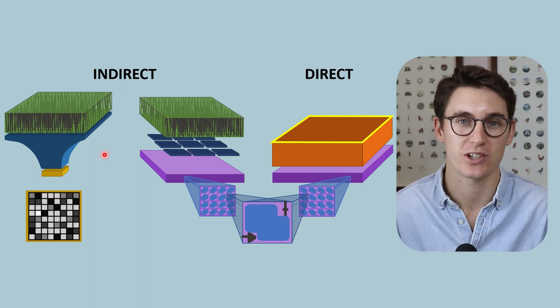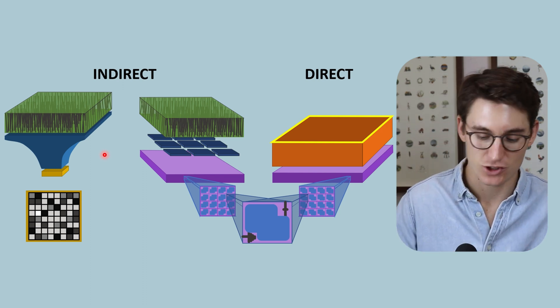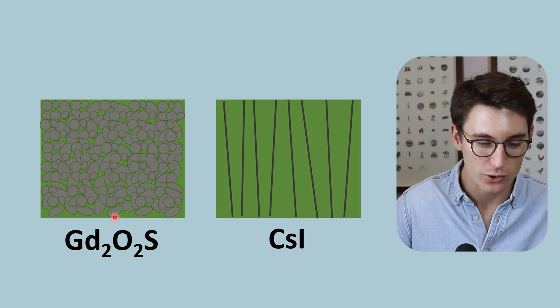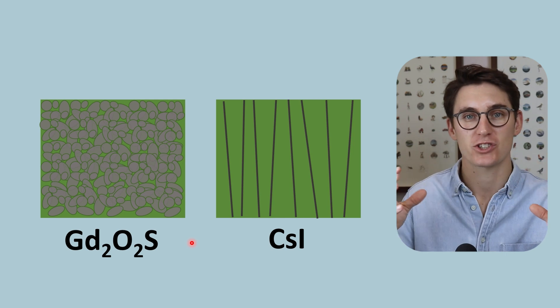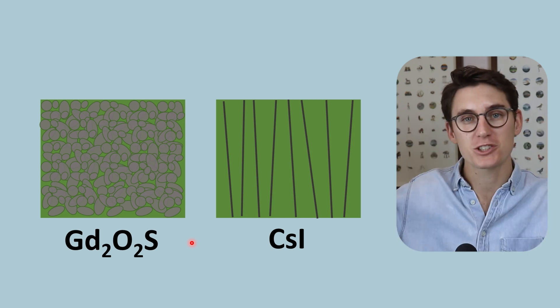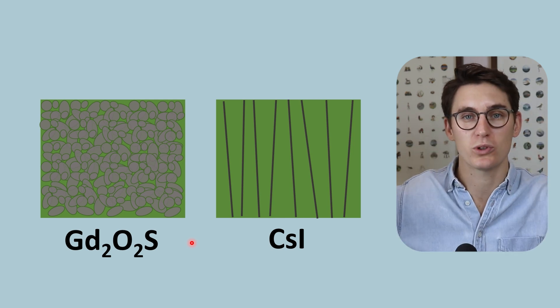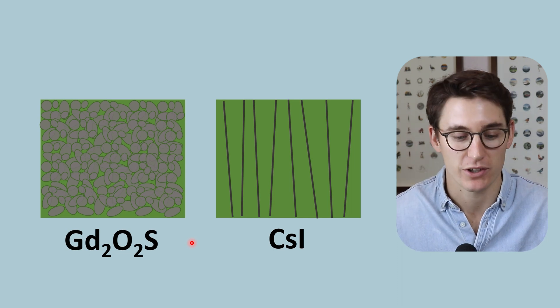Now in screen film radiography we used gadolinium oxysulfide, this amorphous phosphor that had no repeating structure to it. That created multiple light photons and spread them in all directions from a single x-ray photon.